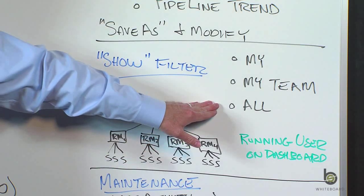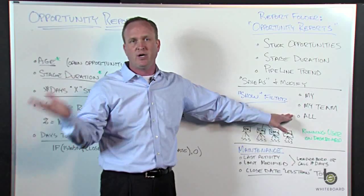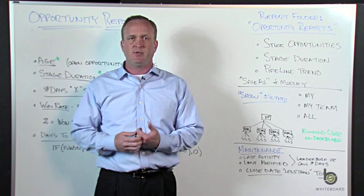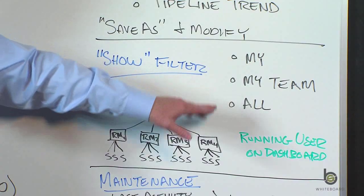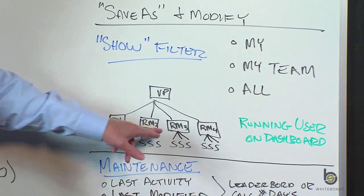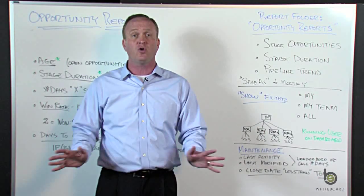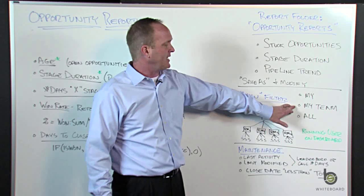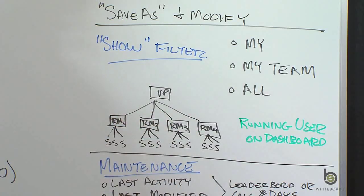If a salesperson runs a My Team report, it basically just gives them their own opportunities. If you don't want to worry about the role hierarchy and just want all opportunities in the database, set it to All. When doing dashboards, you can write one set of reports filtered on My Team, then set the running user on the dashboard. Depending on which person that is, Salesforce uses the role hierarchy — so you don't have to hard-code names. Just change the running user from one regional manager to another and it grabs their set of opportunity reports.